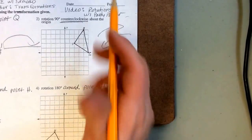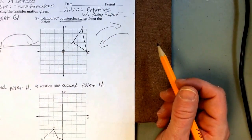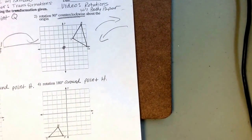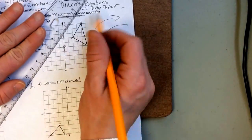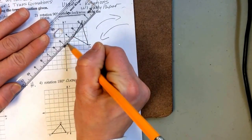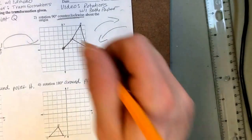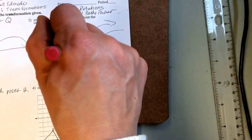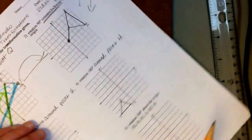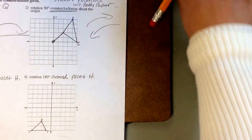The origin is the middle of the axis. I'm going to draw a straight line from the origin to any point on the triangle. That line is what holds steady, and the shape swings around the origin — that's what rotating around the origin means.